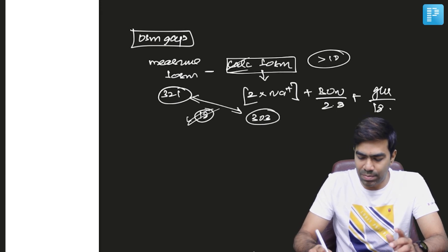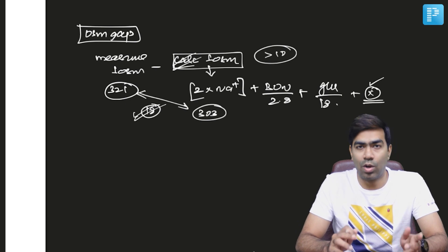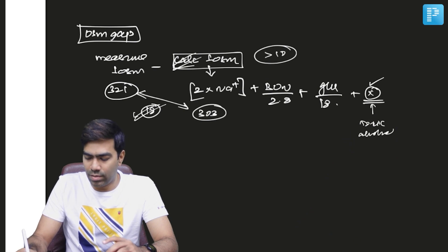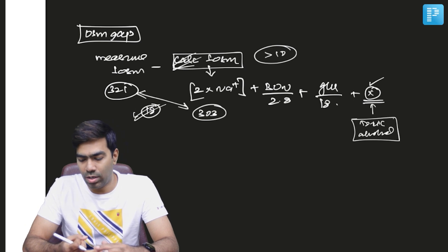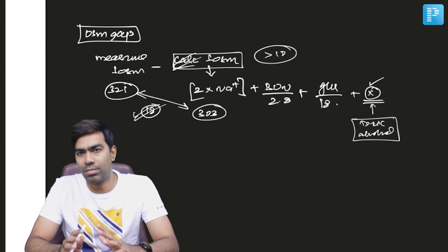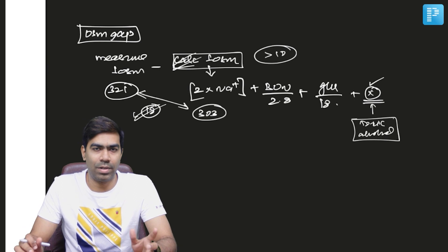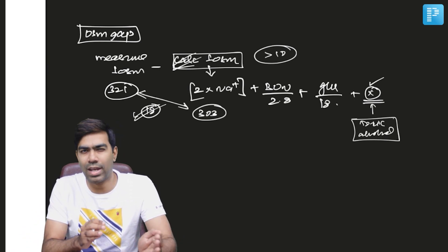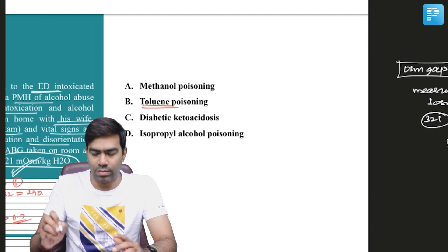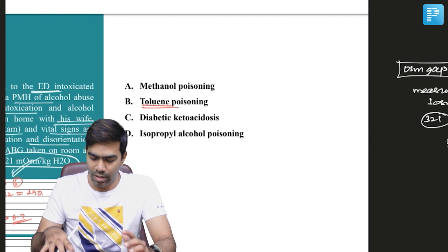So what is causing the gap? It means some substance X is contributing to the serum osmolality that you're failing to account for. That substance is very likely to be a toxic alcohol — it could be ethanol, methanol, isopropanol, or propylene glycol. Even DKA can technically raise the osmolal gap to some extent, maybe up to 15 or 20. Except toluene, all the other substances technically can raise the osmolal gap, so it could be methanol poisoning, DKA, or isopropyl alcohol.